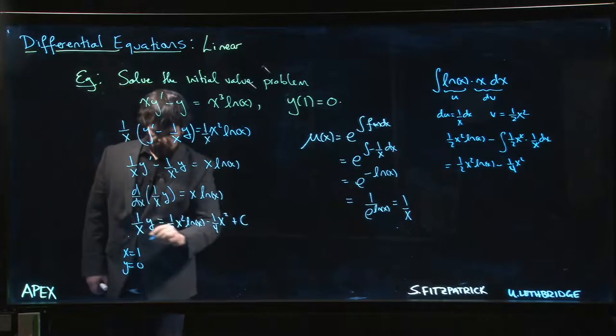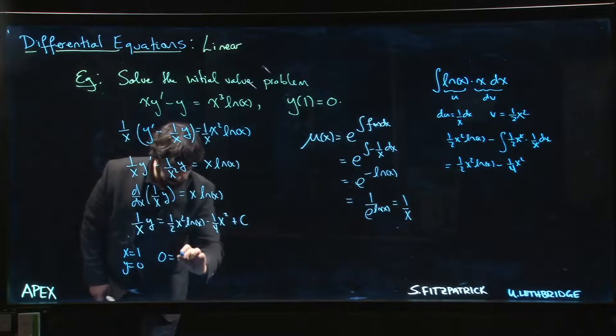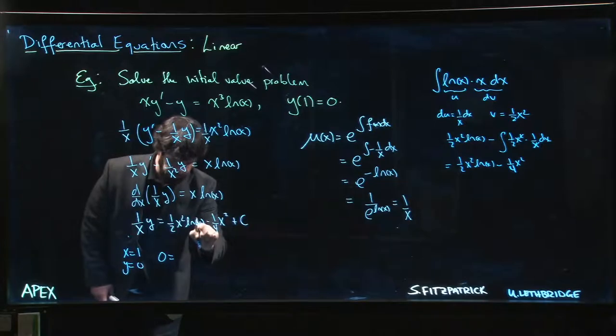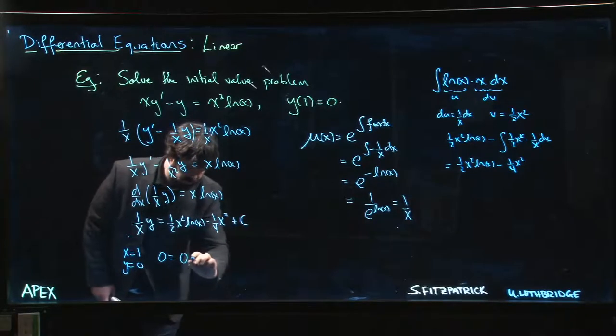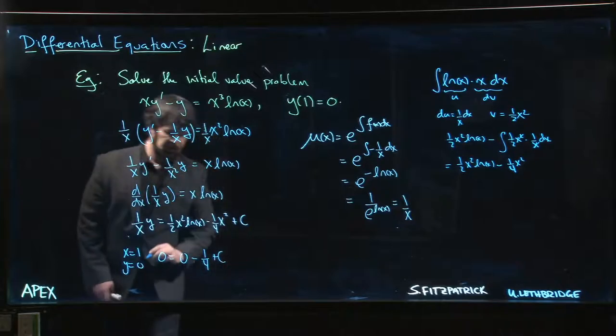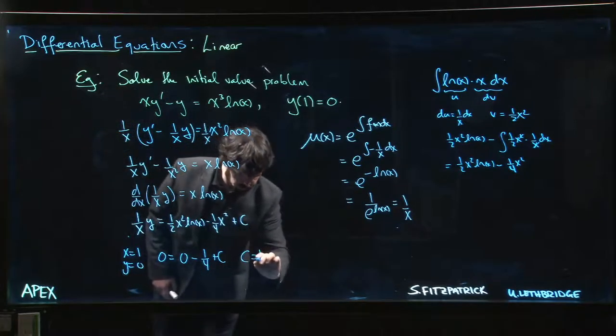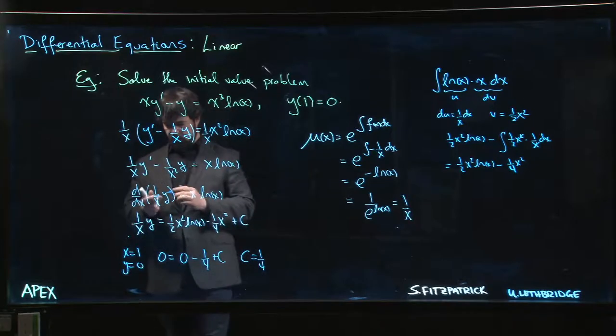So we get 0 equals, well, that's going to be 0 because log of 1 is 0. So 0 - 1/4 + C. Therefore C is 1/4.